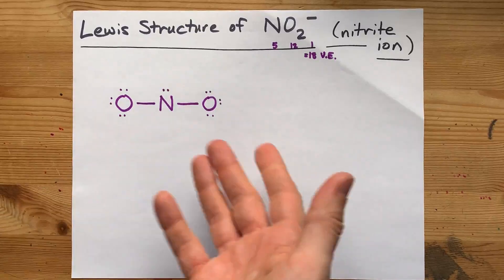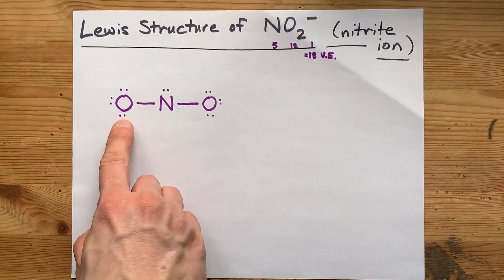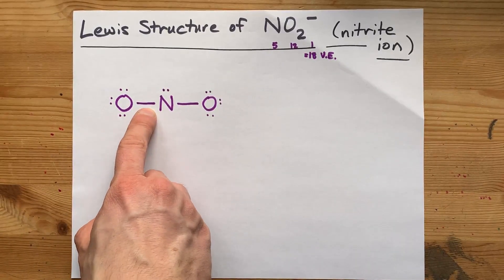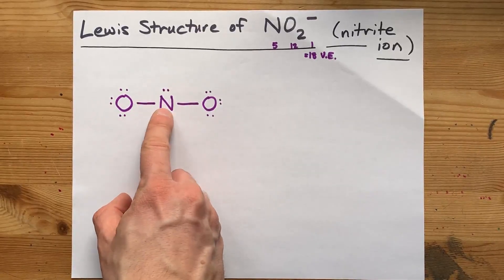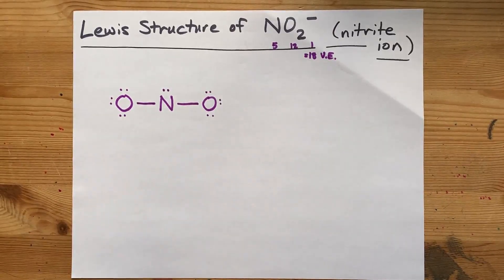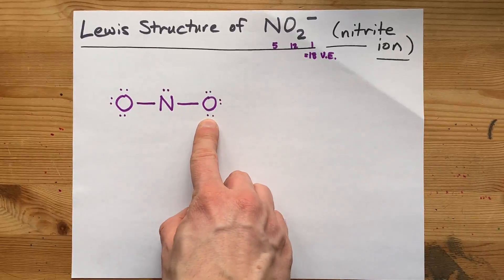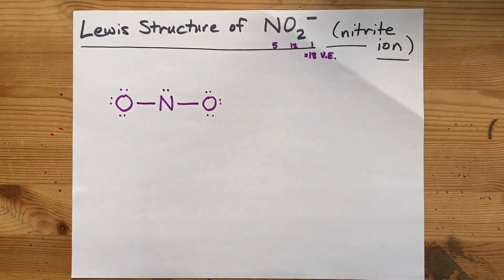The question I have for you is, do you want to move that pair of electrons into a double bond, make it shared so that nitrogen can have a full eight electrons? Or do you want to do it from this oxygen? Bring those in and make a double bond over here.